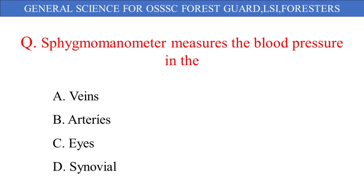Sphygmomanometer measures the blood pressure in the: A. Veins, B. Arteries, C. Eyes, D. Synovial. And the correct answer is option B: Arteries.